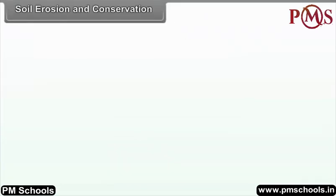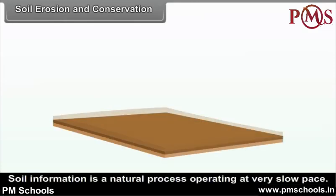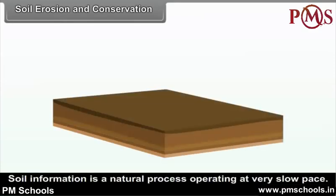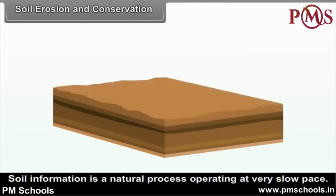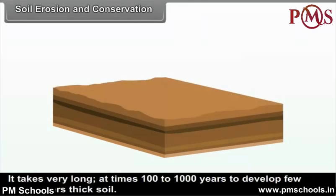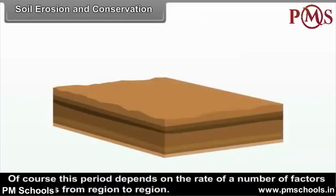Soil Erosion and Conservation. Soil formation is a natural process operating at a very slow pace. It takes very long, at times 100 to 1000 years, to develop a few centimeters thick soil. Of course, this period depends on the rate of a number of factors and varies from region to region.